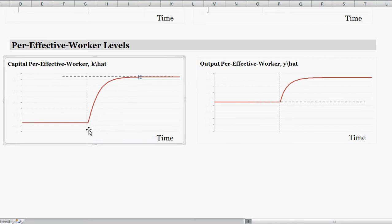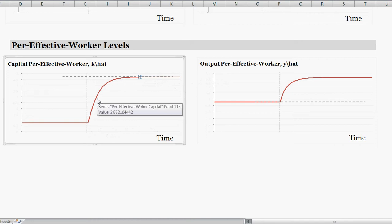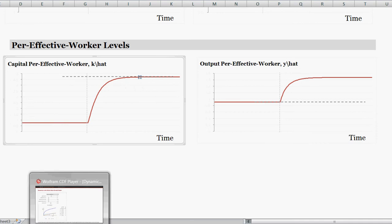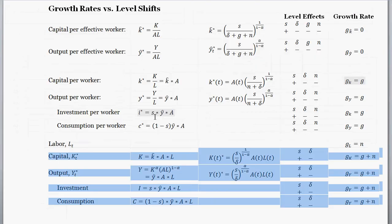This is the transition: initially there's a fast spurts increase in capital per effective worker, and then over time it evolves and approaches asymptotically the new steady state level. You might ask, why is the initial increase in capital per effective worker very fast, but then it slows down? We can think about that by turning to the Solow diagram.